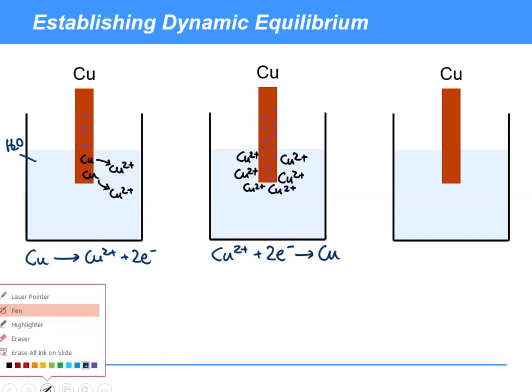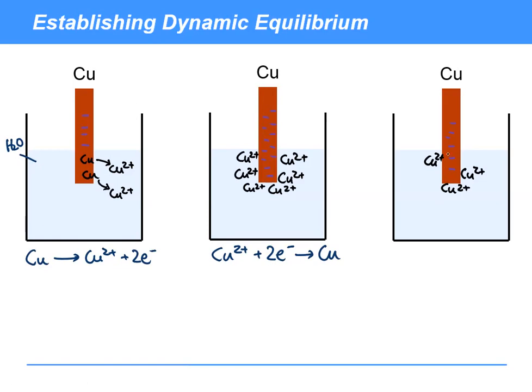And eventually an equilibrium is going to be established where you would have, as a representation here, a few copper 2 plus ions, because copper tends to prefer to stay in the zero oxidation state, and some electrons left on here. So this is the redox equilibrium established, and we often represent these reactions in a reversible reaction written with a reduction as the forward reaction.